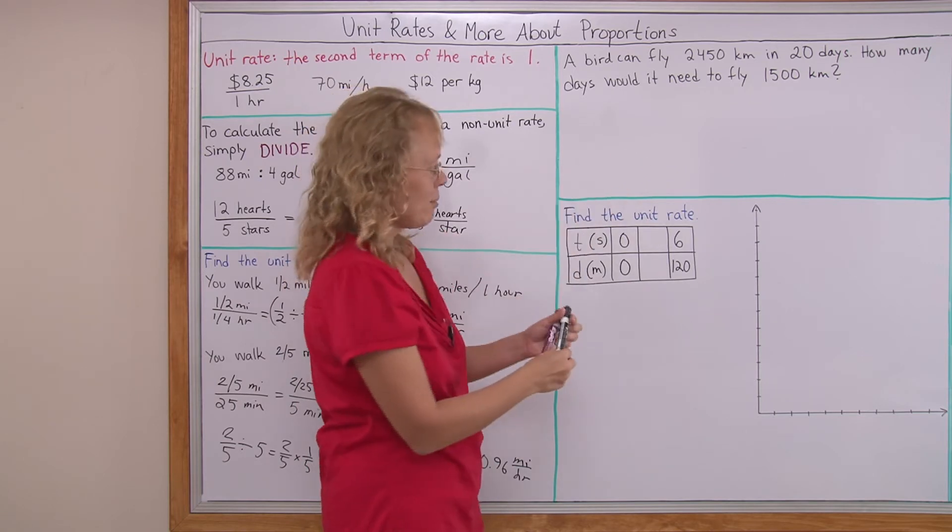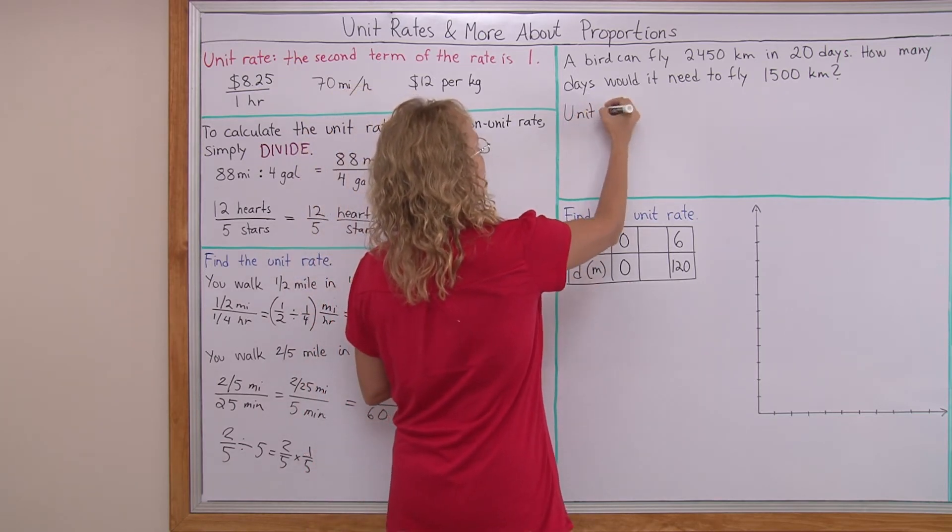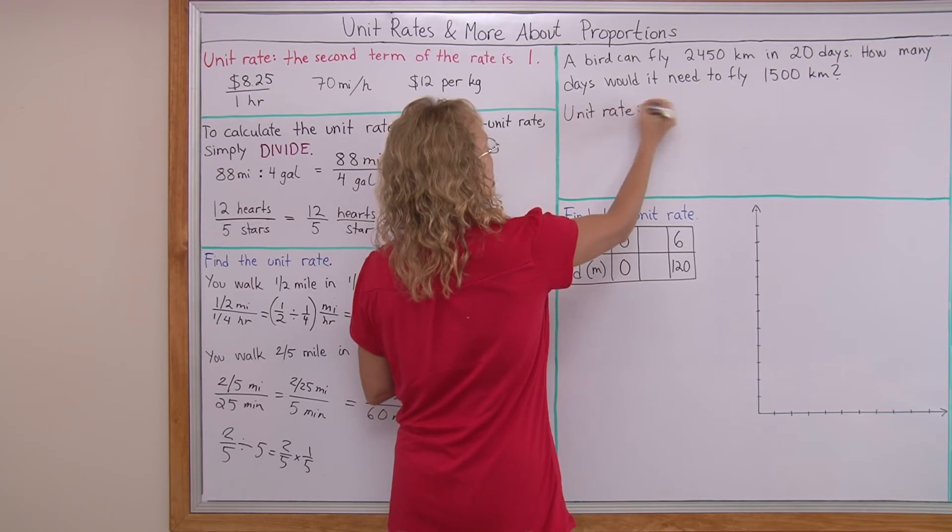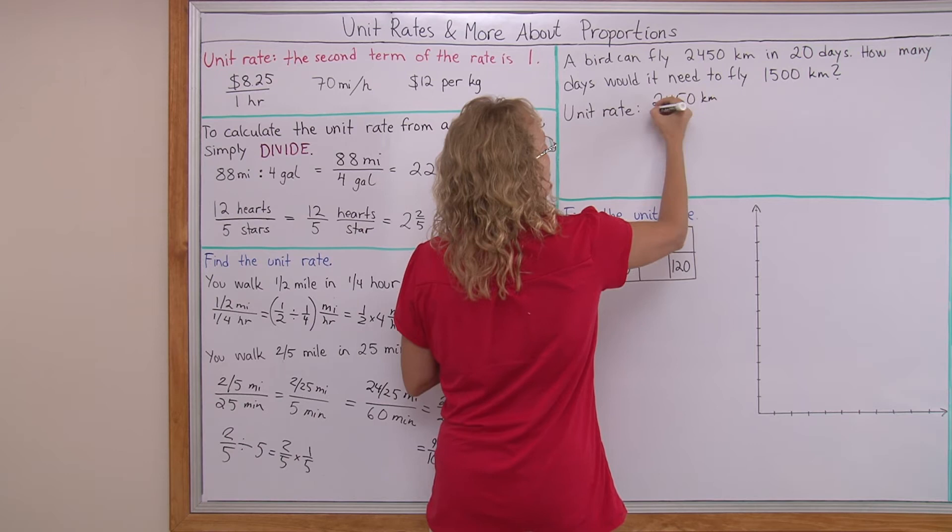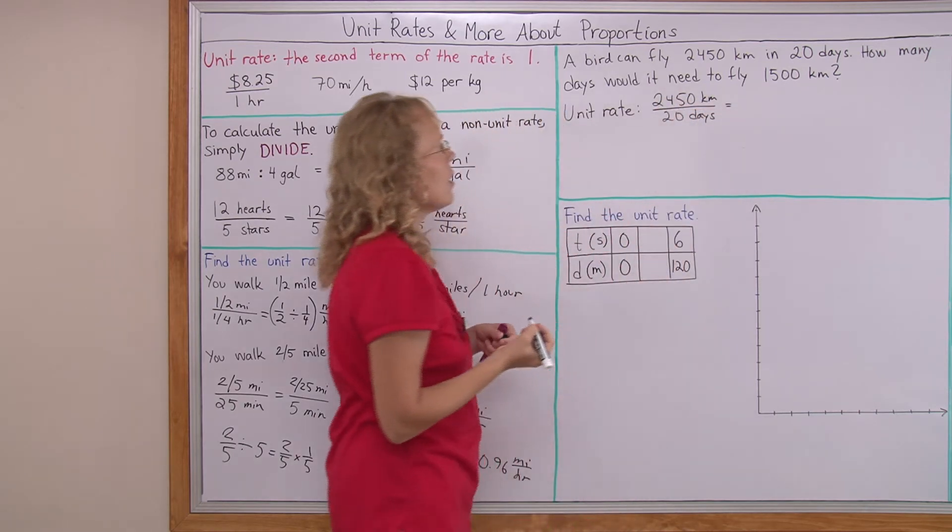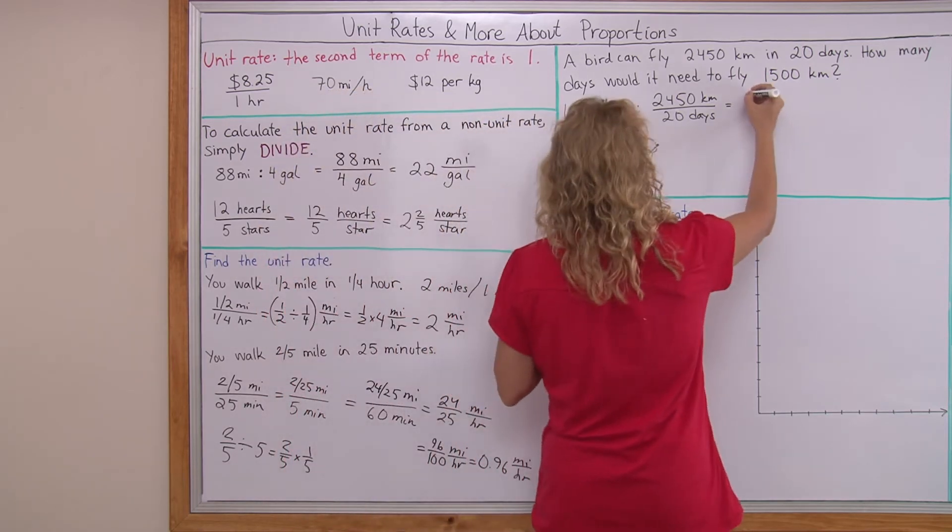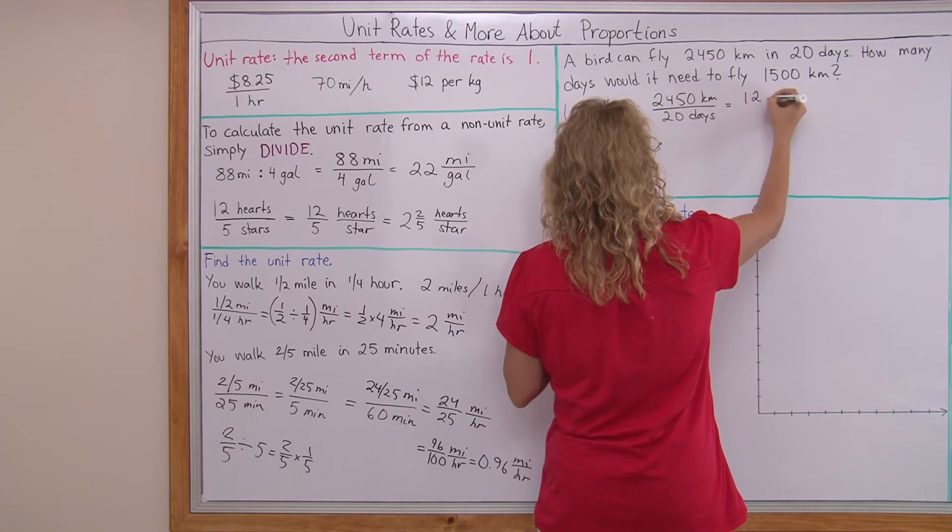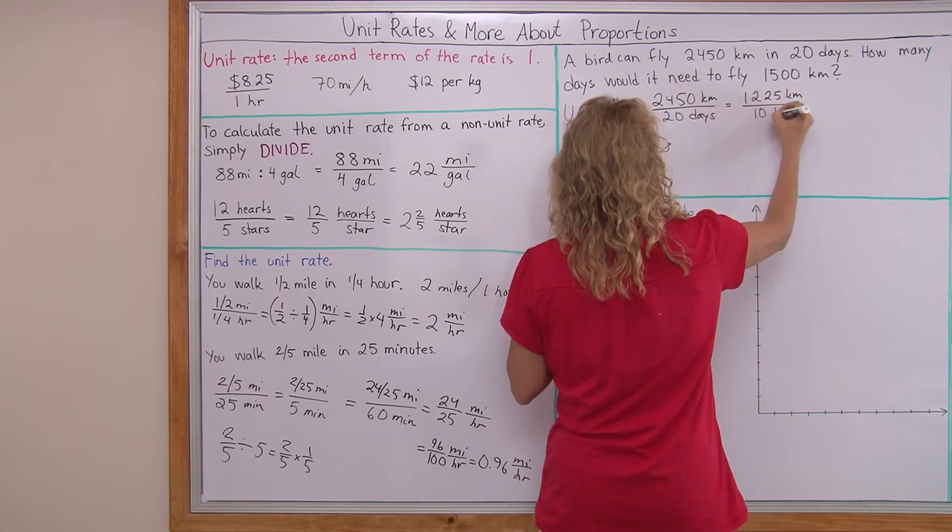You would just simply calculate the kilometers per one day, unit rate, and then figure out the other part. So let's say I put here unit rate. 2,450 kilometers per 20 days. I'm going to take half of that first to get 10 days. And that would be 1225 kilometers per 10 days.